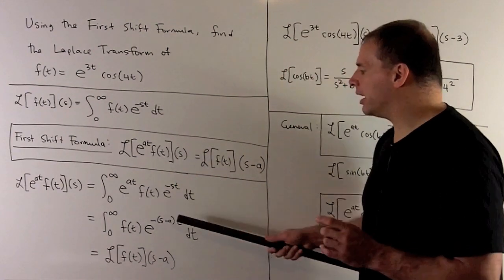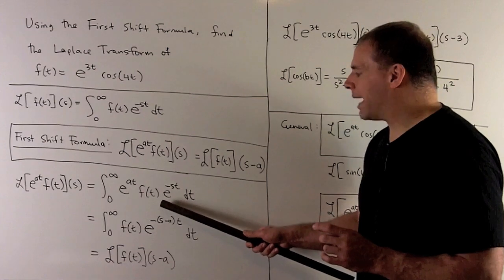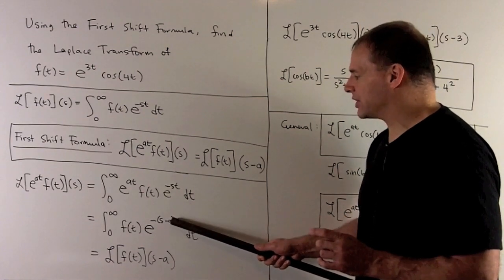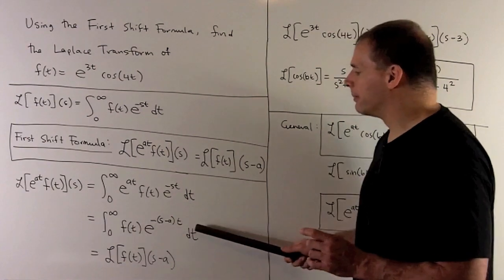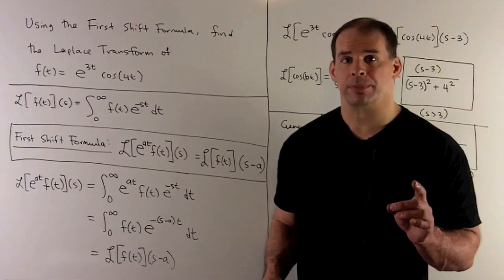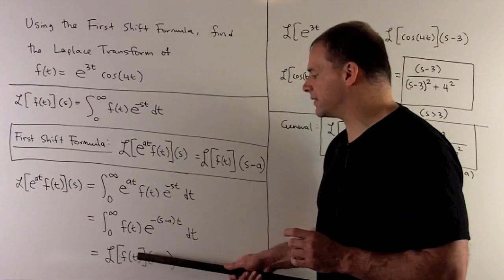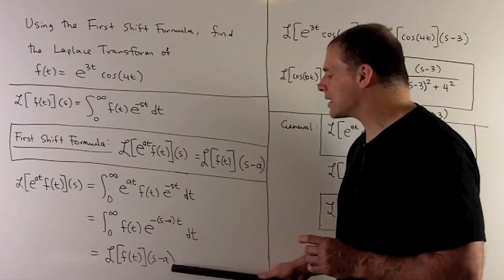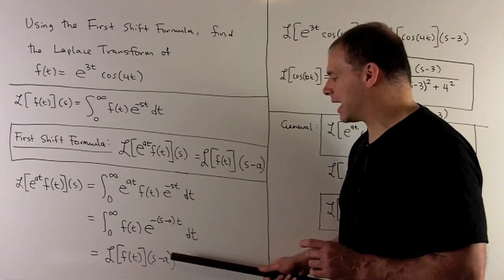When we do our work, the thing that's going to be called box is just s minus a, and then we're left with Laplace transform of f. So what's coming out is Laplace transform of f(t) evaluated at box, and here box is s minus a.